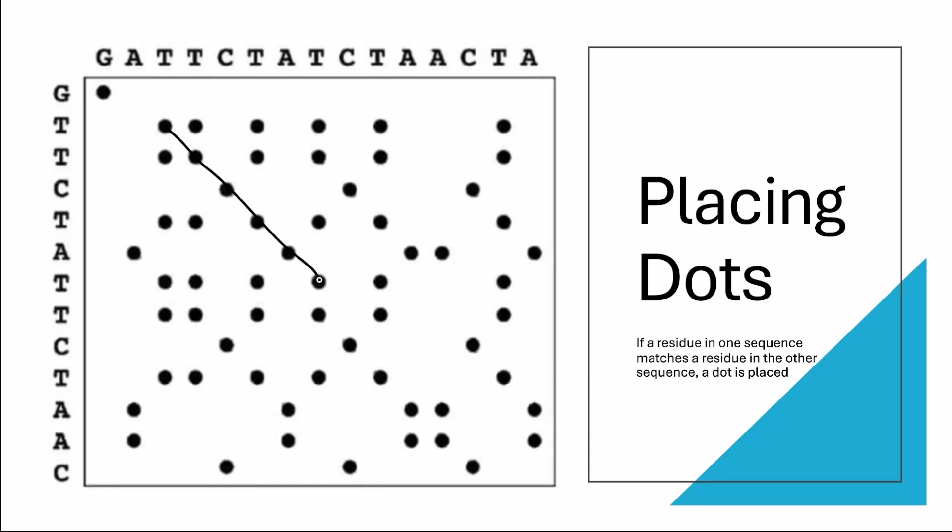Right over here is the continuous diagonal line I have found. Remember, the dots have to be continuous only then a line is placed. In this way, I will find all the diagonal lines and I will trace them. This is another diagonal line. This is the next diagonal line. And this right over here.